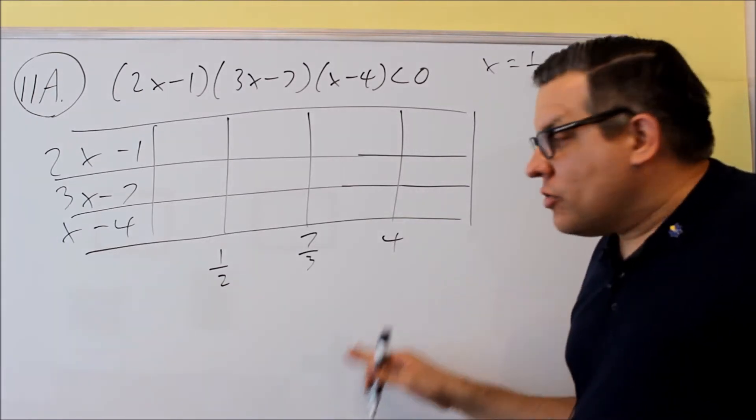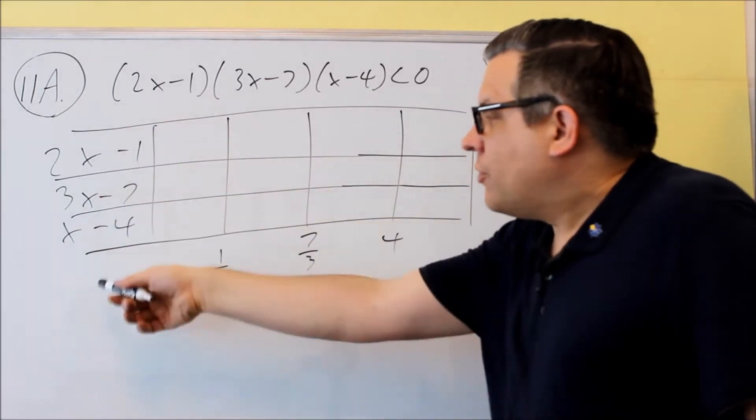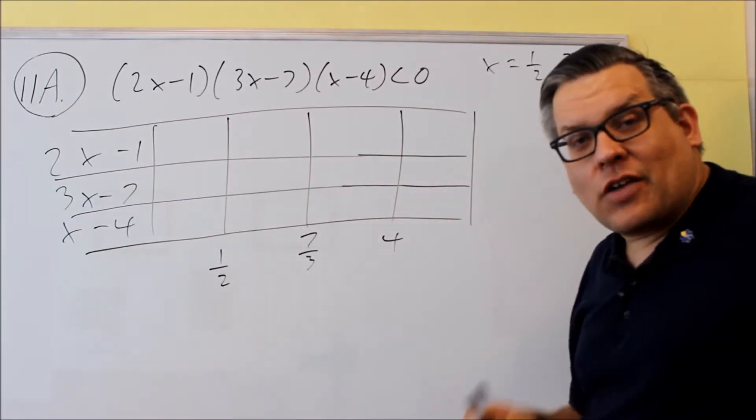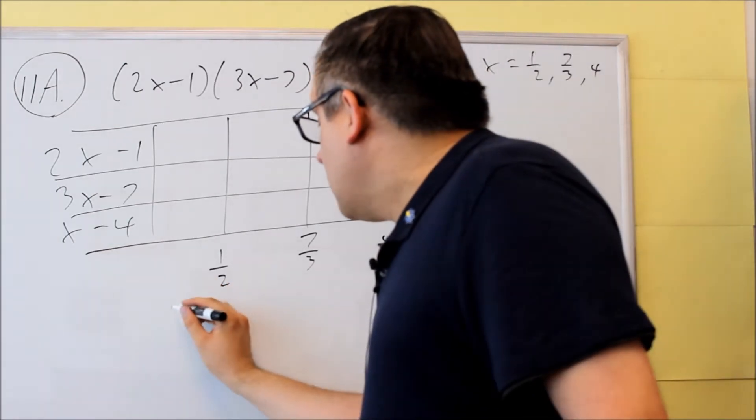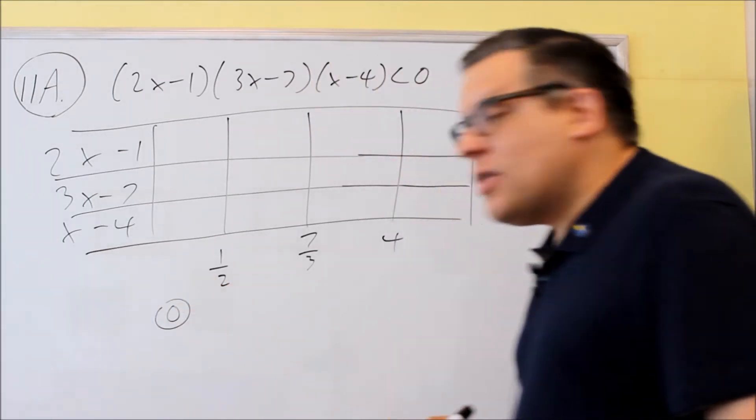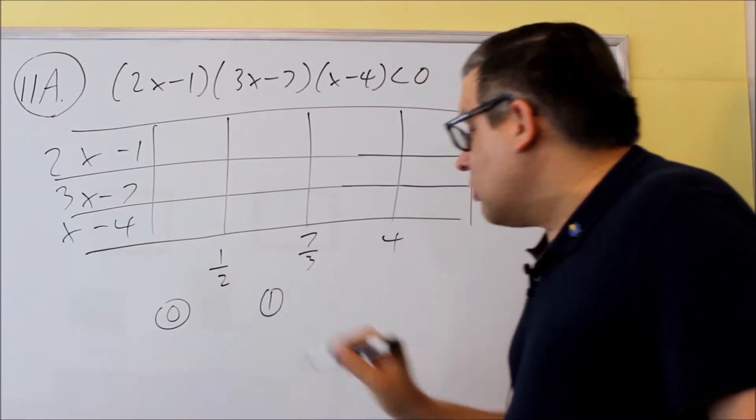You're going to pick test values in between each of these numbers. You're going to put them into the expressions on the left hand side, and it's going to give you either a positive or negative as a result. So for this one, I'm going to test a zero. Between one half and seven thirds, I'll use a one.